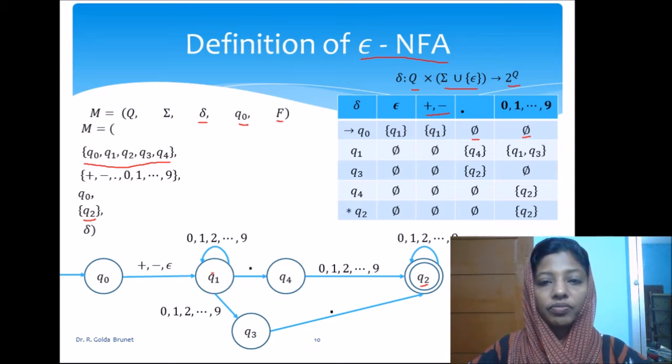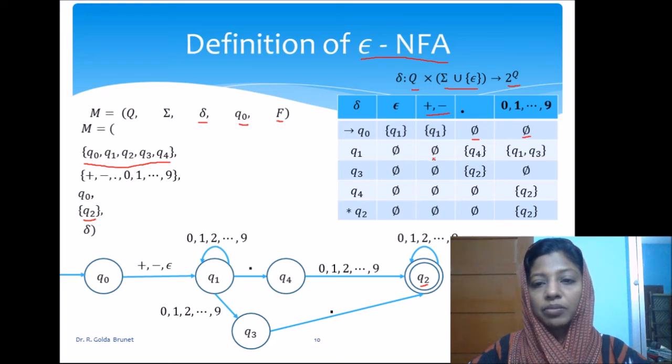From Q1, we do not have any input on the epsilon. And from Q1, I do not have any input on the epsilon. Input for this sign. So, it is also empty. And if we get a dot, we go to Q4. And then from Q1, if we get a symbol, either I stay at Q1 or we go to Q3. So, that is what is given.